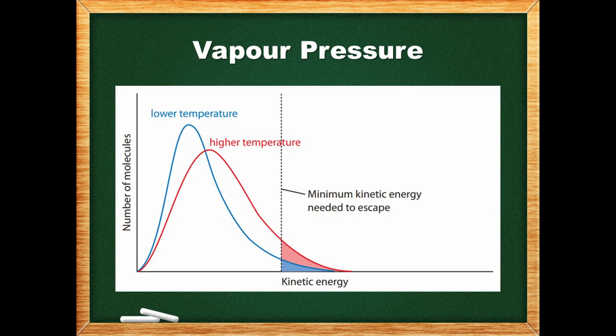Below the boiling point, although the average kinetic energy of the liquid molecules is not sufficient for vaporization to take place, some molecules do have enough kinetic energy to escape from the surface of the liquid and enter the gas phase. The blue curve represents a sample at a lower temperature and the red curve at a higher temperature. The area under the curve to the right of the minimum kinetic energy needed to escape represents particles with enough energy to evaporate — at higher temperature, more particles have enough energy. If the amount of substance does not change, the total area under the curve will always be the same.